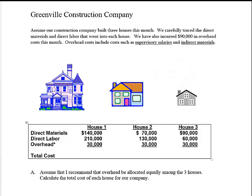I have allocated overhead equally to each house. Now you total up the materials, labor, and overhead to get the total cost for each house. House number one — adding materials, labor, and overhead — comes to $380,000. House number two is $230,000. House number three is $180,000.